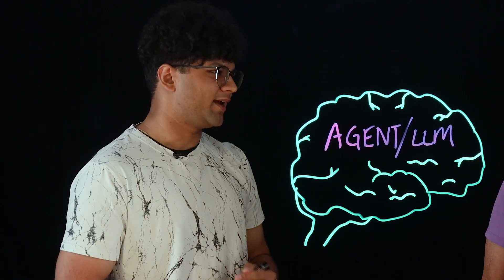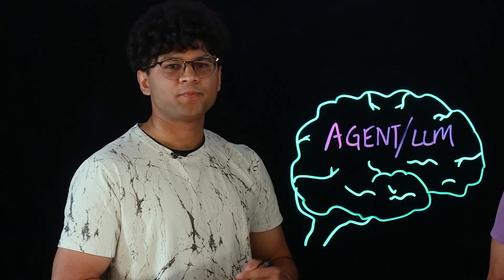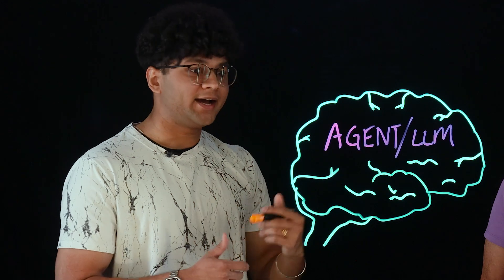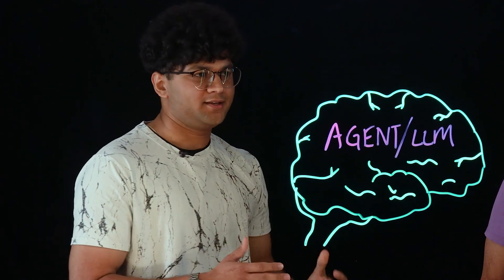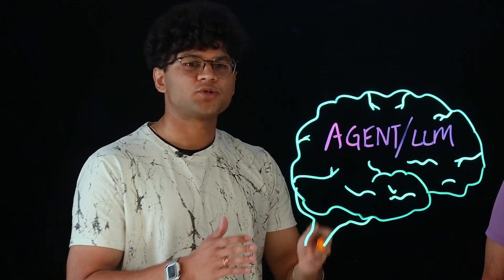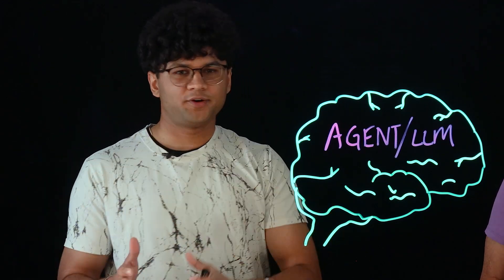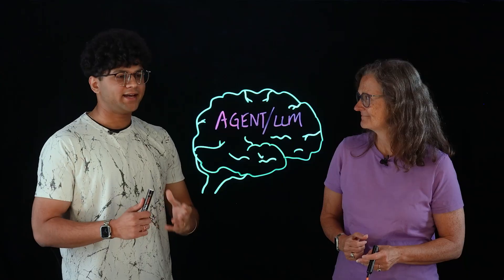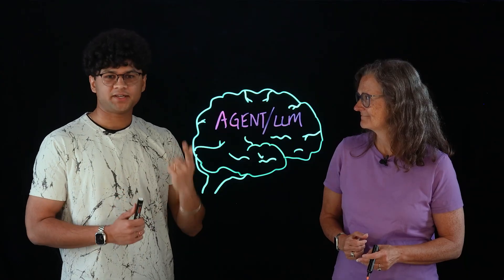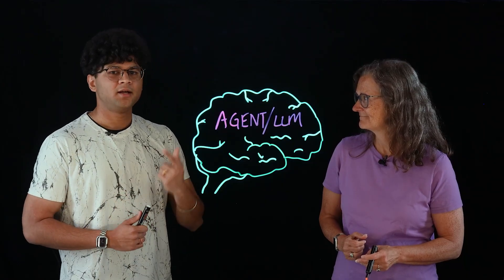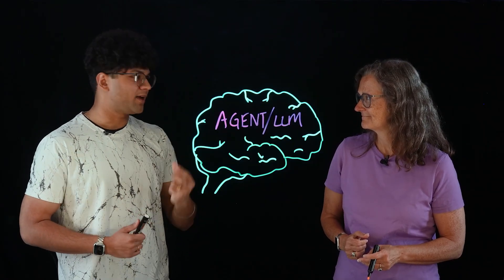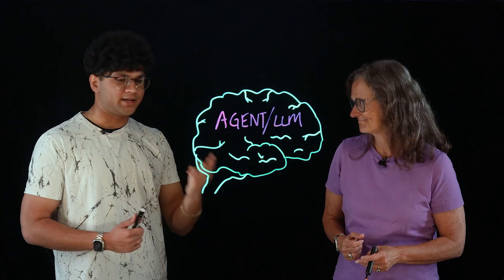So what is an AI agent? The difference between AI agents and previously LLMs, or even before that traditional ML models, is that AI agents can perceive inputs, make informed decisions, and then they act or they generate.